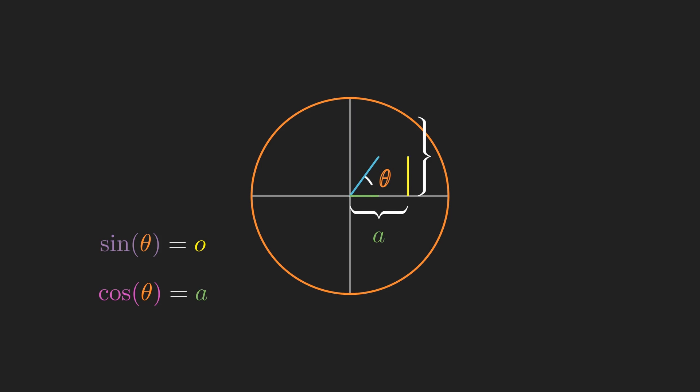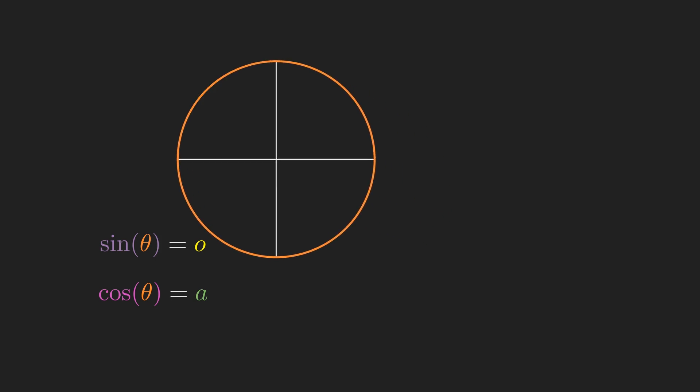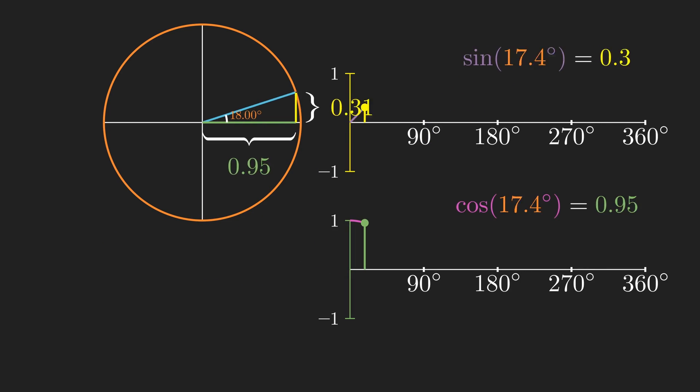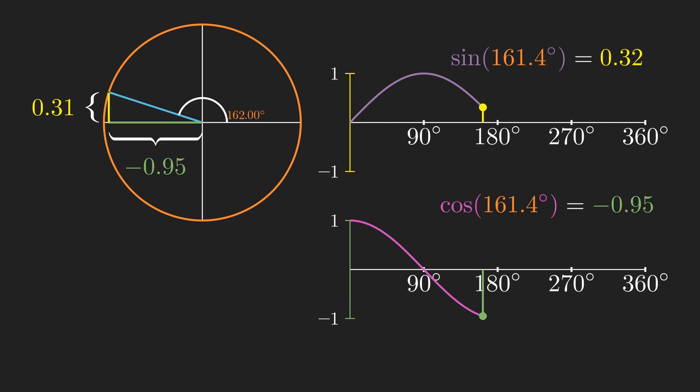Now that we've done this, we just need to draw a triangle for any given angle in this circle in order to get the value of sine and cosine. Using a computer makes this much simpler. You can see the graphs of our equations forming, with the lengths of each side of our triangle building up the graphs.